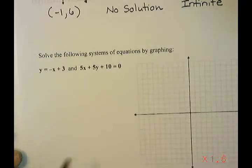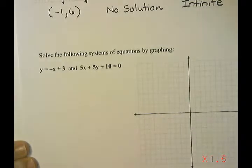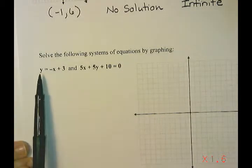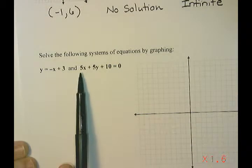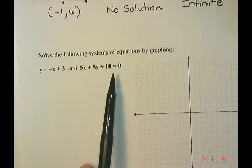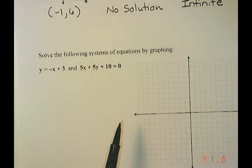So one of the methods we're going to look at in this unit is solving by graphing. So it says solve the following system of equations by graphing. So you'll notice that we're given two lines. The first one is y equals negative x plus 3, and then 5x plus 5y plus 10 equals 0.